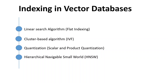The second indexing technique is called IVF, or cluster-based algorithm. IVF, or Inverted File, is a cluster-based indexing technique. It uses k-means clustering to cluster all the vectors. When a query vector is provided, it calculates the distance between the query vector and the center of each cluster, then starts searching for the nearest neighbor in the cluster whose center is closest to the query vector.